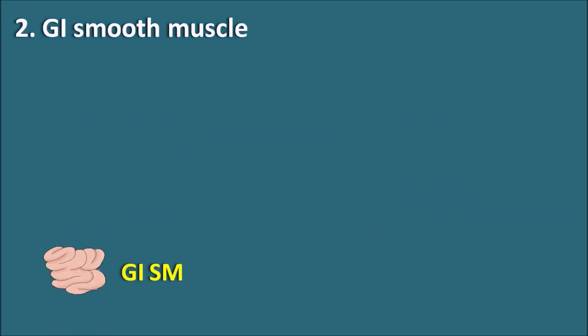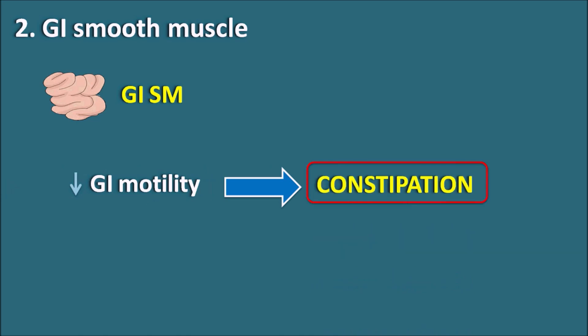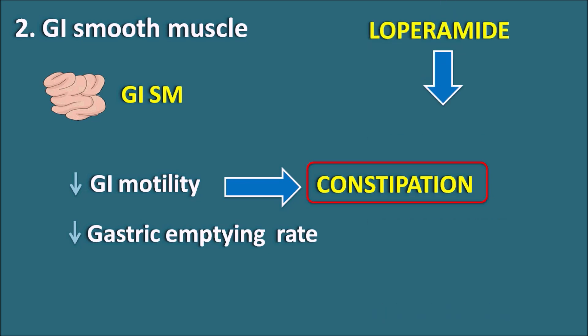The second inhibitory target is GI smooth muscle. Opiates can produce an inhibitory response, decreasing GI motility which mainly results in constipation. They can also decrease the gastric emptying rate, producing a delay which may reduce absorption of other drugs co-administered with opiates. Since opiates produce constipation, they can be used to treat diarrhea. For example, loperamide is particularly used as an anti-diarrheal agent. This drug does not have analgesic action but mainly shows anti-diarrheal action by decreasing GI motility.